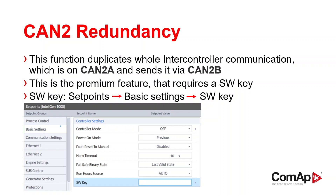CAN intercontroller communication redundancy, or CAN2 redundancy, is a function that duplicates the whole intercontroller communication which is on CAN2A and sends it via CAN2B.